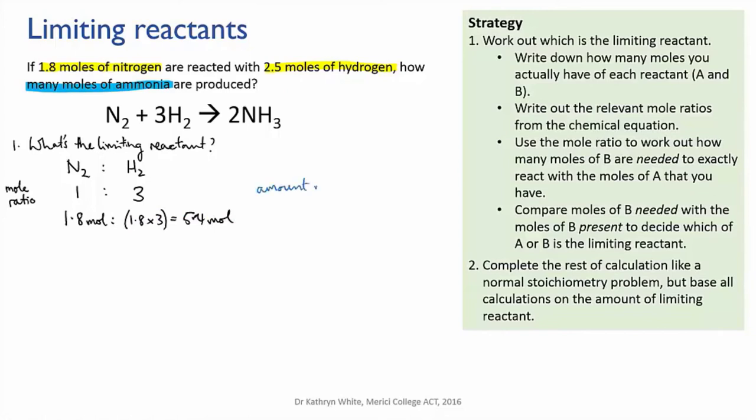What this tells us is that we need 5.4 moles of hydrogen to fully react with the 1.8 moles of nitrogen. But we only have 2.5 moles of hydrogen. So that's not enough to fully react with the nitrogen. And that means that the hydrogen is going to run out first. Hence, hydrogen is the limiting reactant here. That means that nitrogen must be the excess reactant. And that's because the hydrogen will run out before all of the nitrogen has reacted. So there will be nitrogen left over.